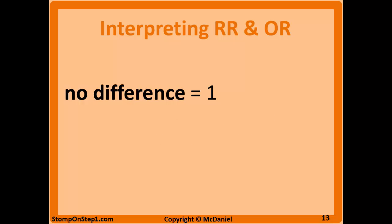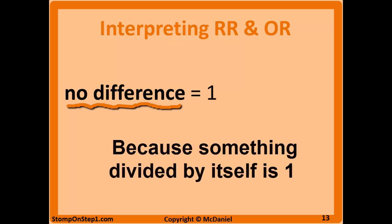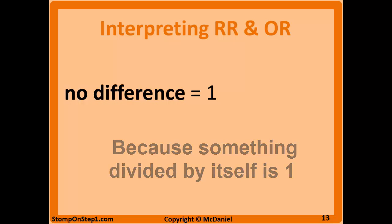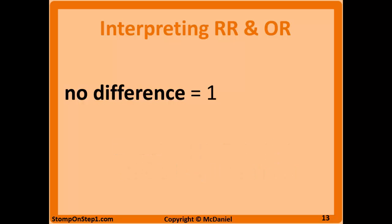You also need to be able to interpret RR and OR. The key thing to remember for both of them is that the point of no difference is 1. So if you receive an RR or an OR of 1, that means there's no difference between the two groups being compared. That would mean that the treatment or risk factor being studied has no effect on the rate of outcome development.